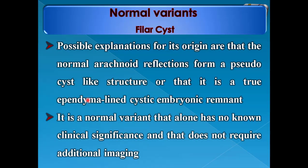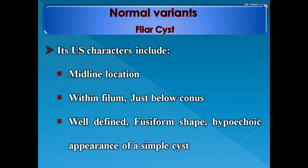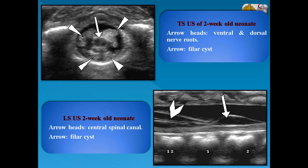Filar cyst: possible explanations for its origin are that normal arachnoid reflections form a pseudocyst-like structure, or that it is a true ependymal-lined cystic embryonic remnant. It is a normal variant that alone has no clinical significance and does not require additional imaging. Its ultrasound characteristics include midline location within the filum just below the conus, well-defined fusiform shape, and hypoechoic appearance of a simple cyst.